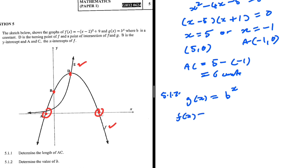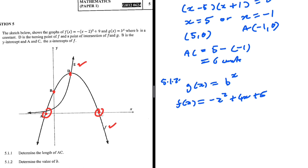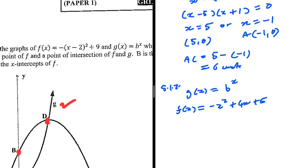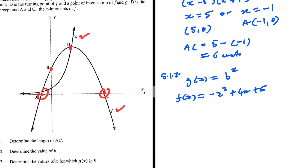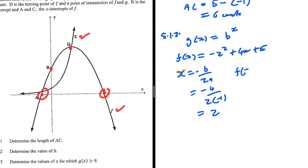We know that f of x equals minus x squared plus 4x plus 5. We need the coordinates of d. d is the turning point, so x at the turning point is x equals minus b divided by 2a. That gives us minus 4 divided by 2 multiplied by minus 1, so x equals 2. Then f of 2 equals minus 2 squared plus 4 multiplied by 2 plus 5, which equals 9.